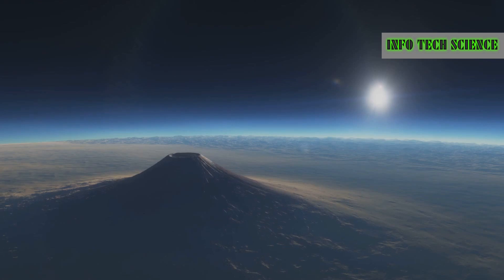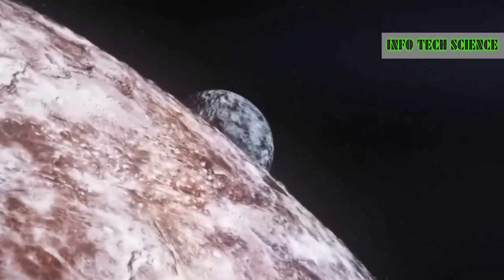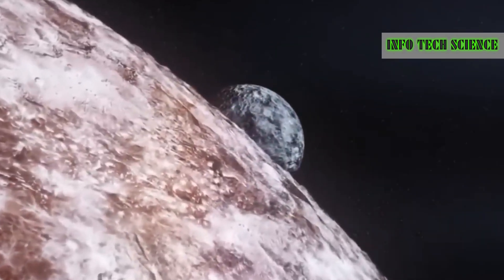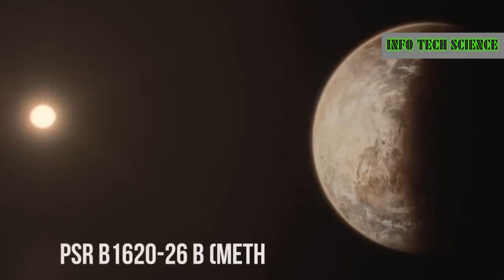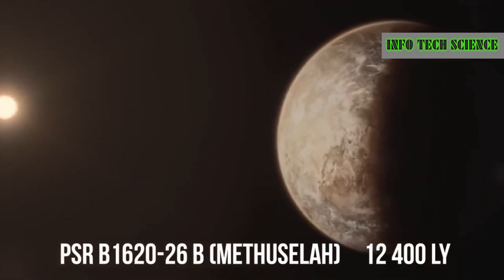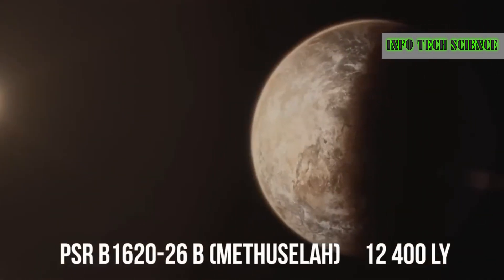There's a planet in the Scorpius constellation, 12,500 light years away, named after Methuselah, a biblical character who lived for around 10 centuries. This planet is 13 billion years old, almost as old as the universe, and survives more than 200 powerful earthquakes and magnetic storms every year.